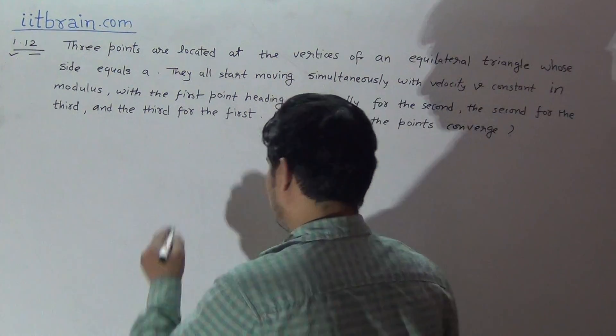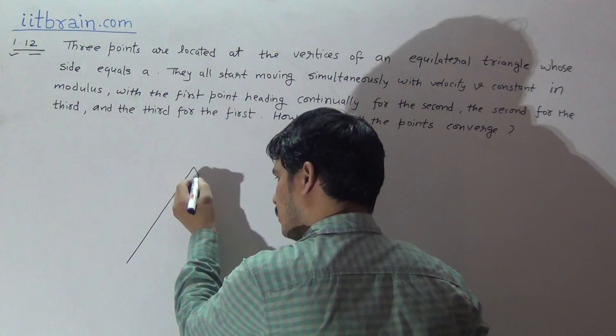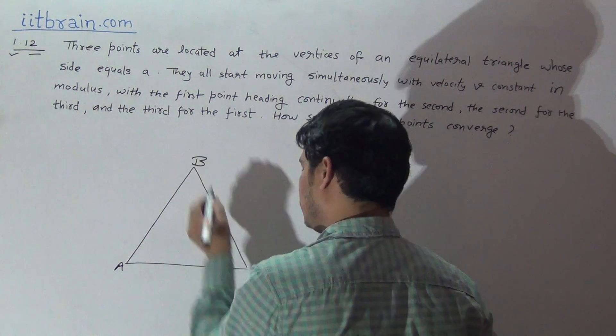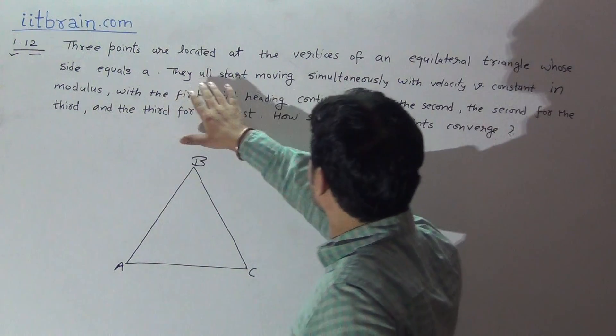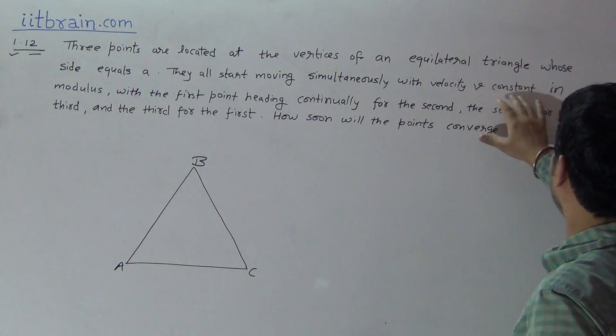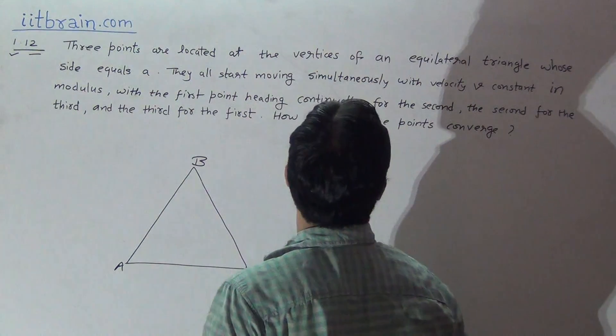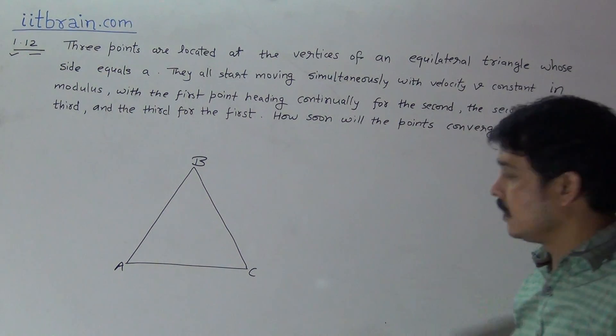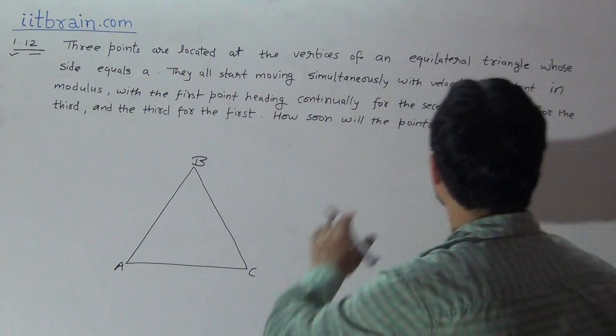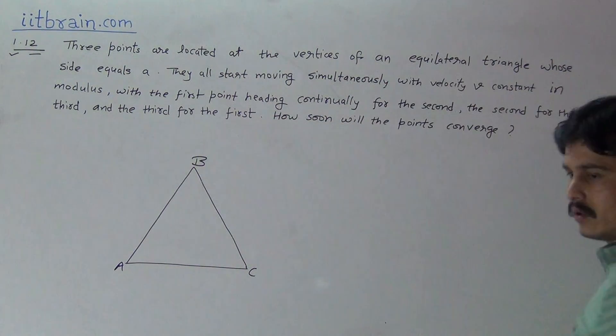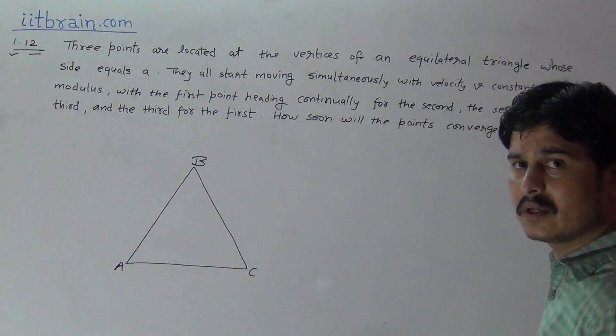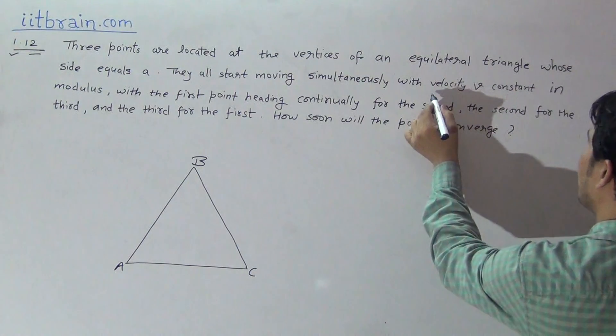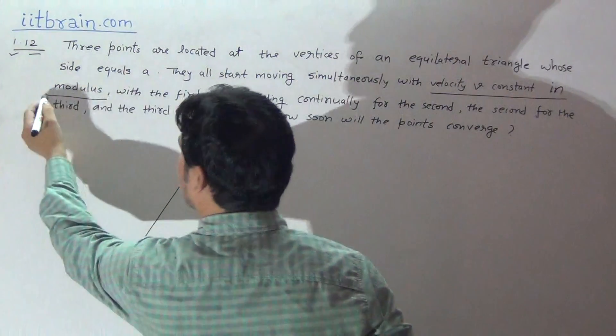So the question is, three particles are there at the vertices of an equilateral triangle, these three particles are A, B, C. They all start moving simultaneously with velocity V constant in modulus. This is not velocity, it is speed. Now all the particles are moving with speed. With velocity V constant in modulus, it means its numerical value is V. The speed of the particle is given as V.